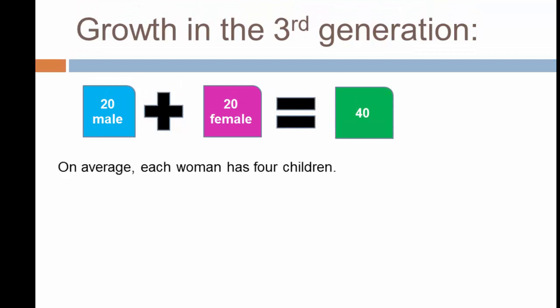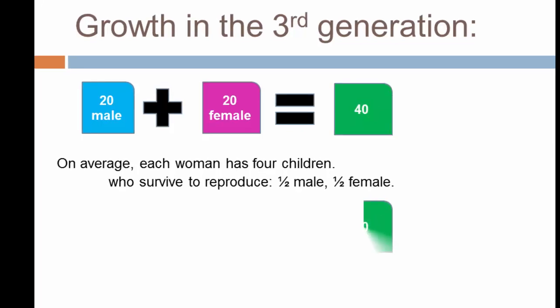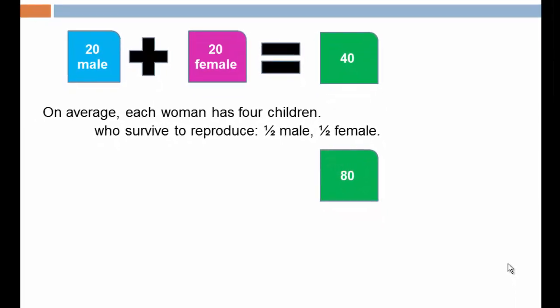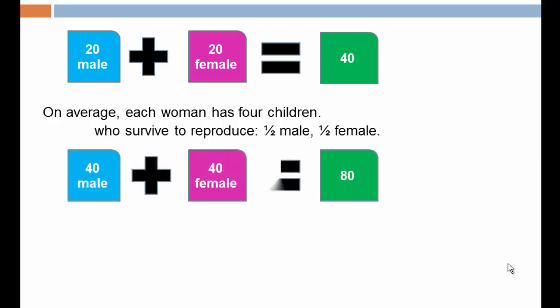Now let's look at the third generation. Starting from where we ended in generation two, with the same assumptions, we take 20 females times four. Our population in the next generation is 80 — 40 males plus 40 females. The growth from the second to the third generation is 40 individuals. Notice that the rate is staying the same but the numerical increment of growth is getting larger.